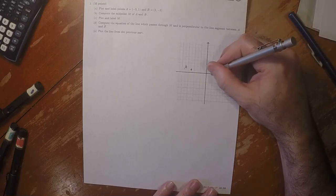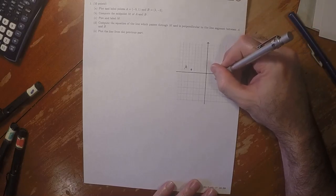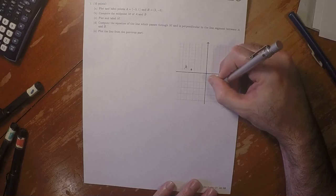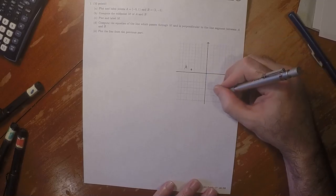Point B, 3, negative 5. So 1, 2, 3, 1, 2, 3, 4, 5. So that's point B.